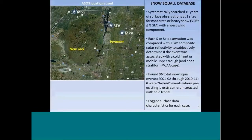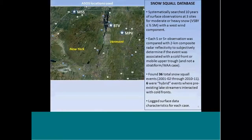Each observation was then compared with two-kilometer composite radar reflectivity to subjectively determine if the event was indeed associated with a cold front or mobile upper-level trough, and not a stratiform or warm-advection type event. In the end, we found 36 total snow squall events running from the winter of 2001–2002 through 2010–2011. Six of these events were hybrid events where there was a pre-existing lake streamer which also interacted with a cold front. For each event, we logged surface data characteristics.